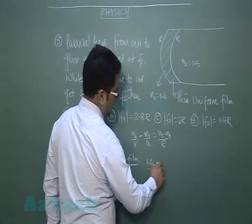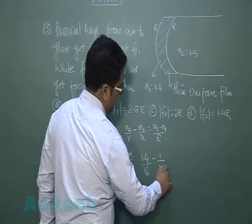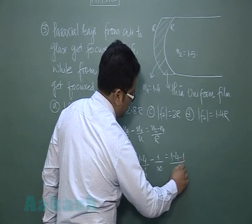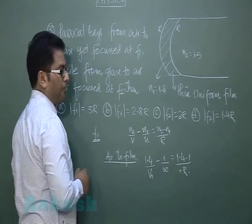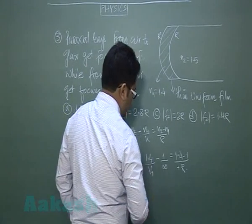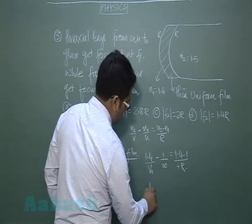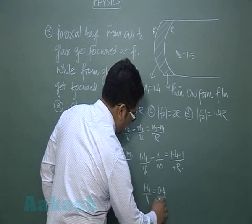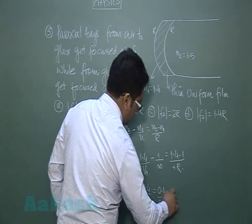Then by v1 minus 1 by infinity is 1.4 minus 1, and the radius would be plus r. So for this particular calculation you would see that this is 1.4 by v1 is 0.4 by r.